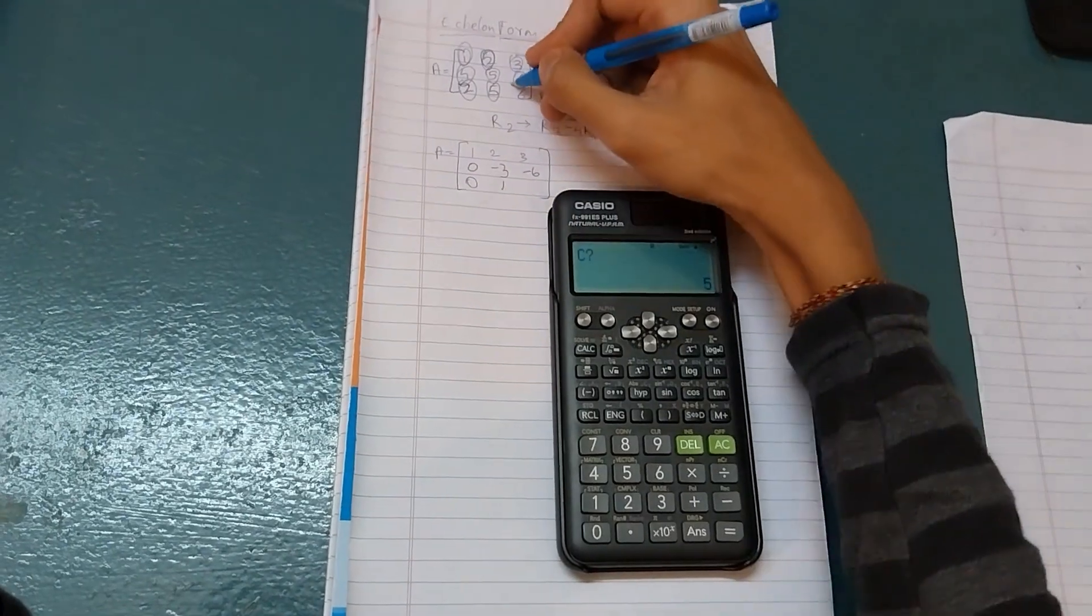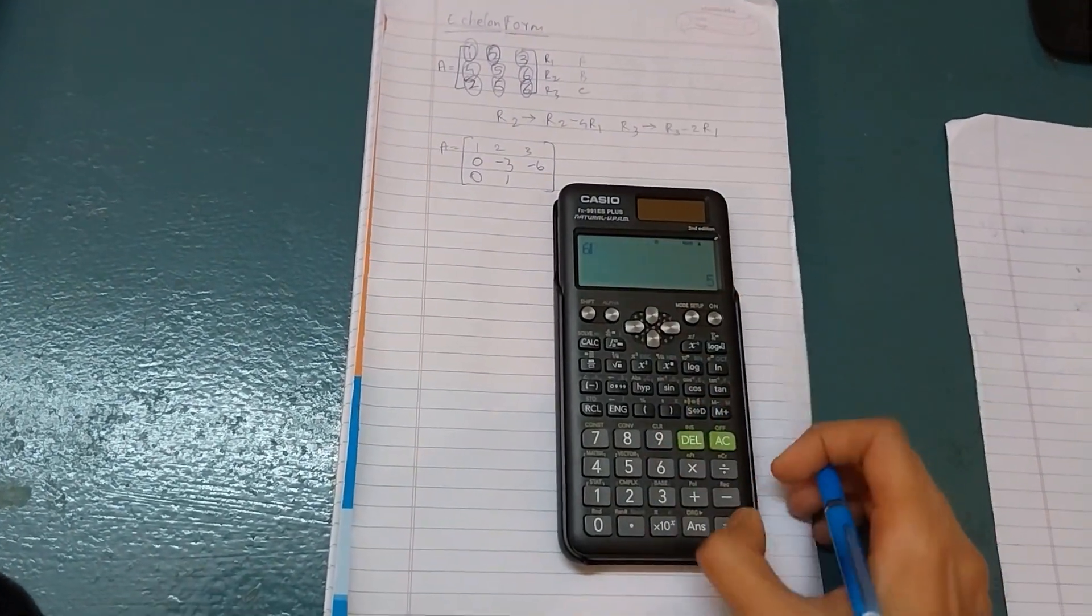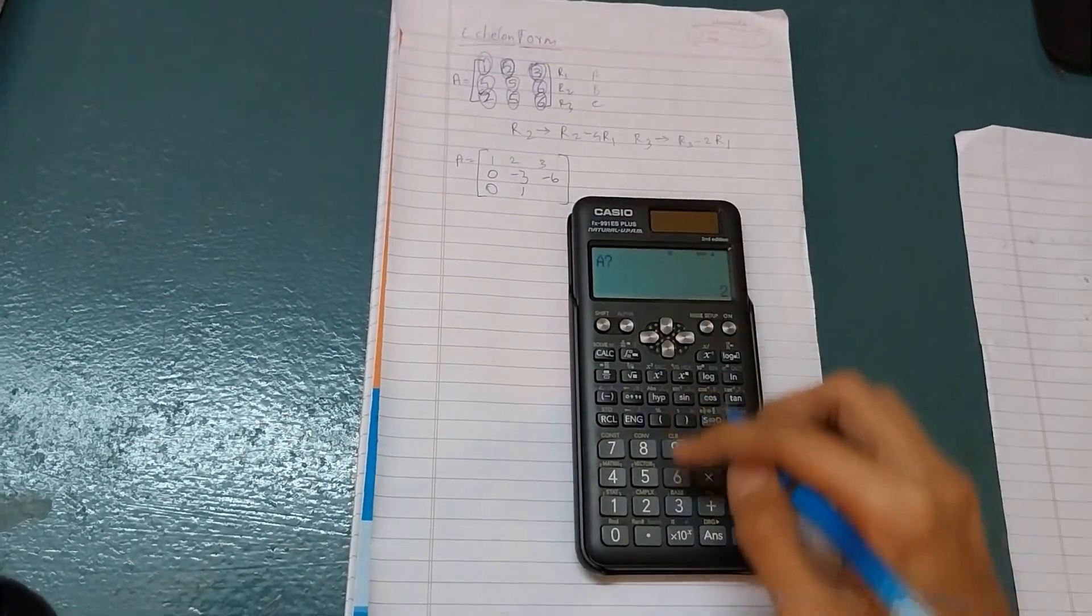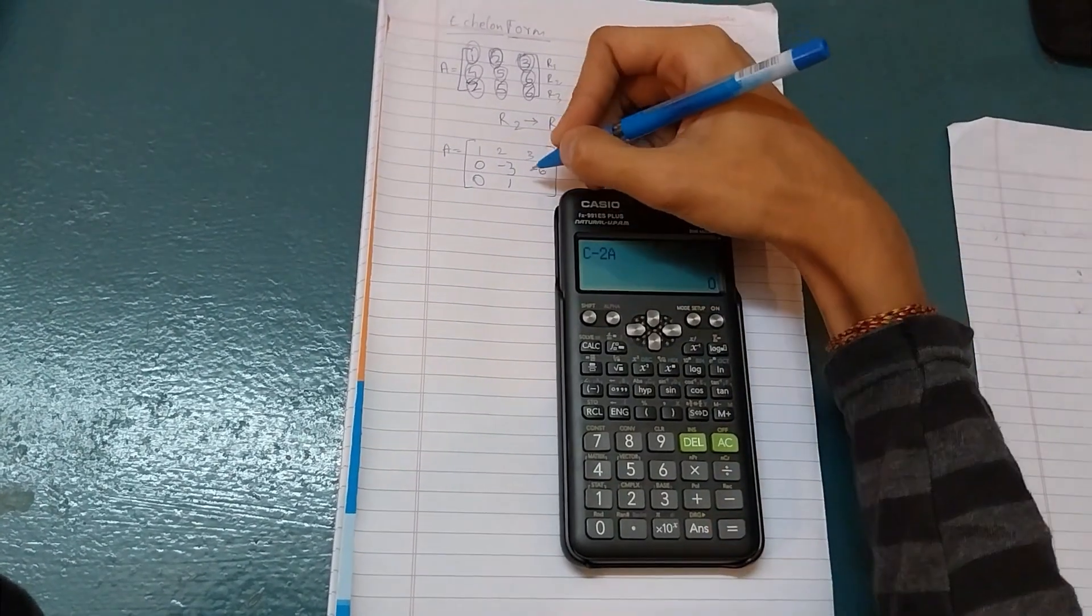Press equals. Then C value is 6. Then A value is 3. Then this is 0.